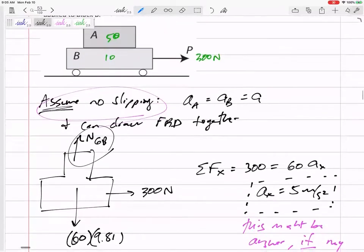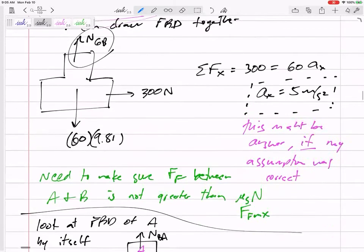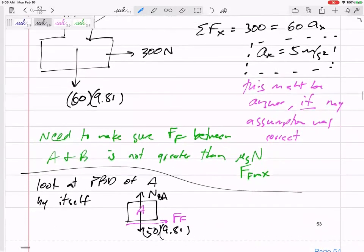All right. So what do we do? First, I assumed they were moving together. So I did my free body diagram. I summed the force in X and found the acceleration in X. But I need to solve for the force of friction to make sure that my force of friction is possible.